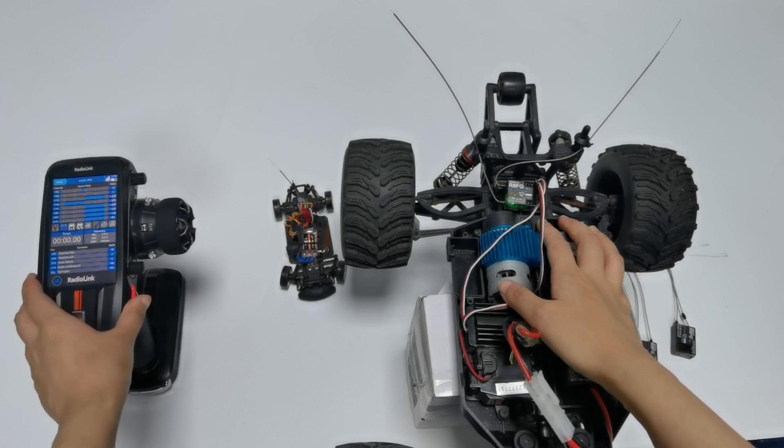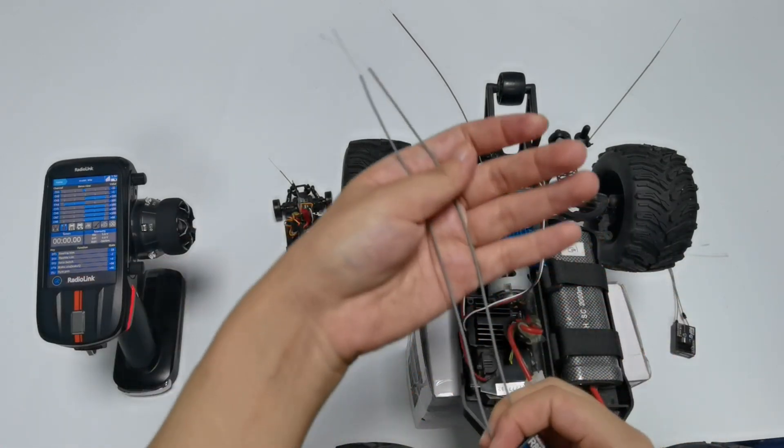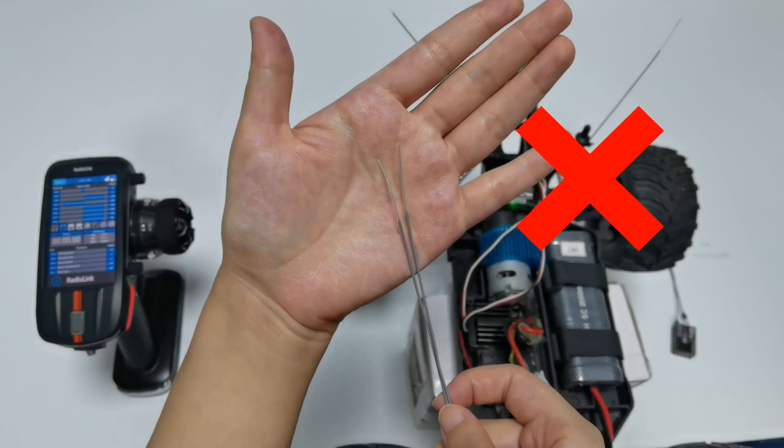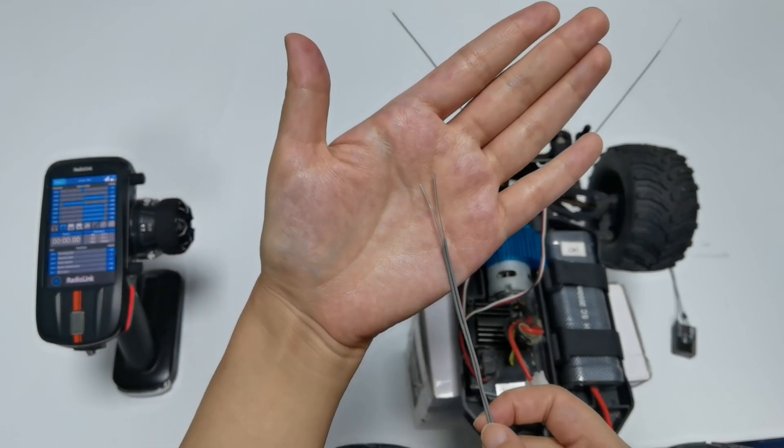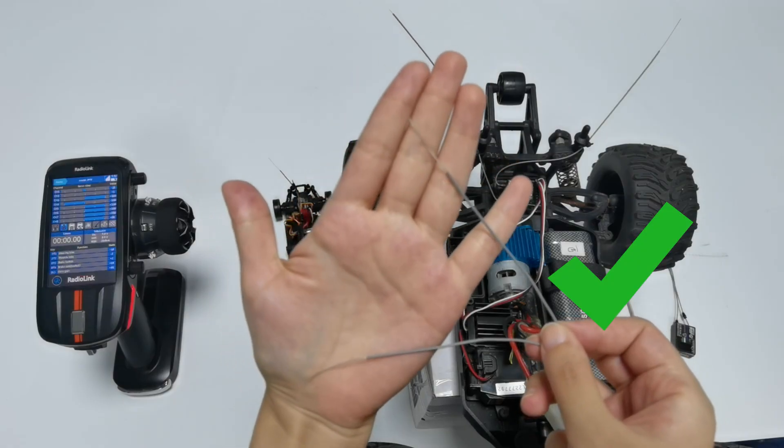First, the two antennas of the receiver cannot overlap or fit together. It is best to keep two antennas at an angle apart from each other, like this.